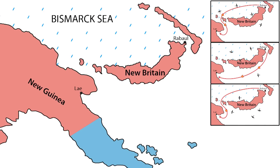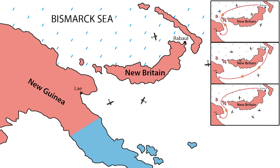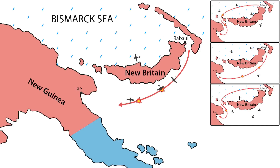The fourth and last scenario shows the U.S. Air Force concentrated on the southern part of the island and the Japanese taking the southern route. In this case, having the majority of airplanes in the area and having good visibility, General Kenney would achieve three days of bombing.